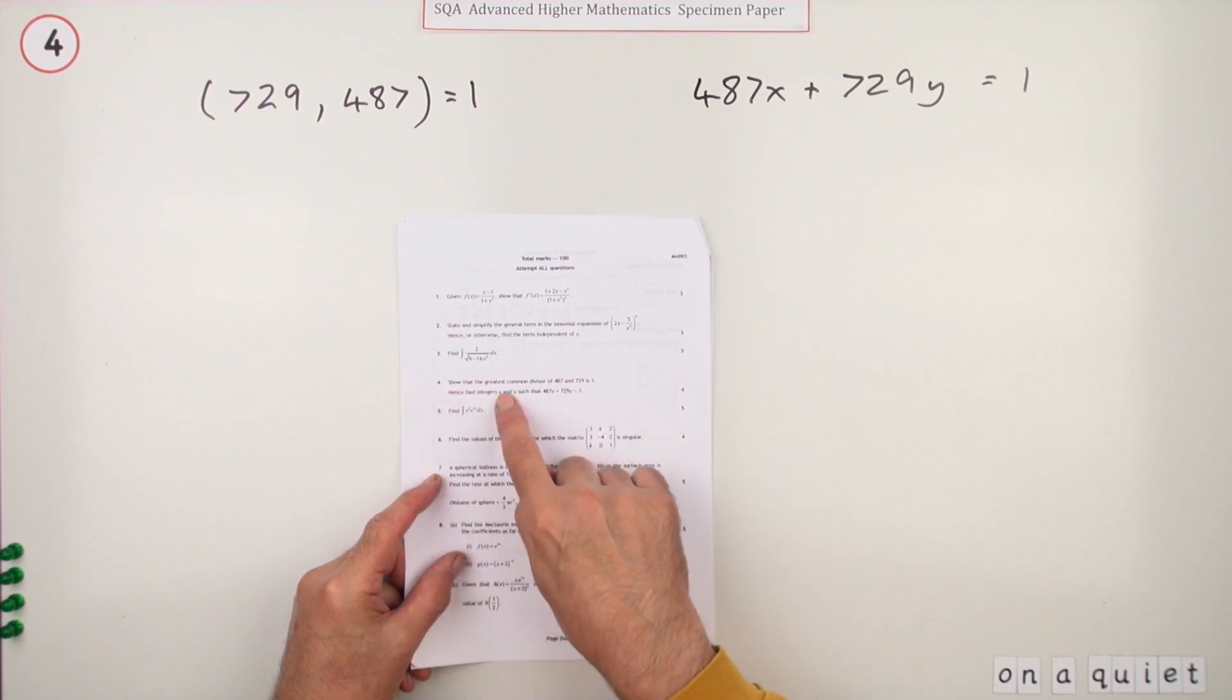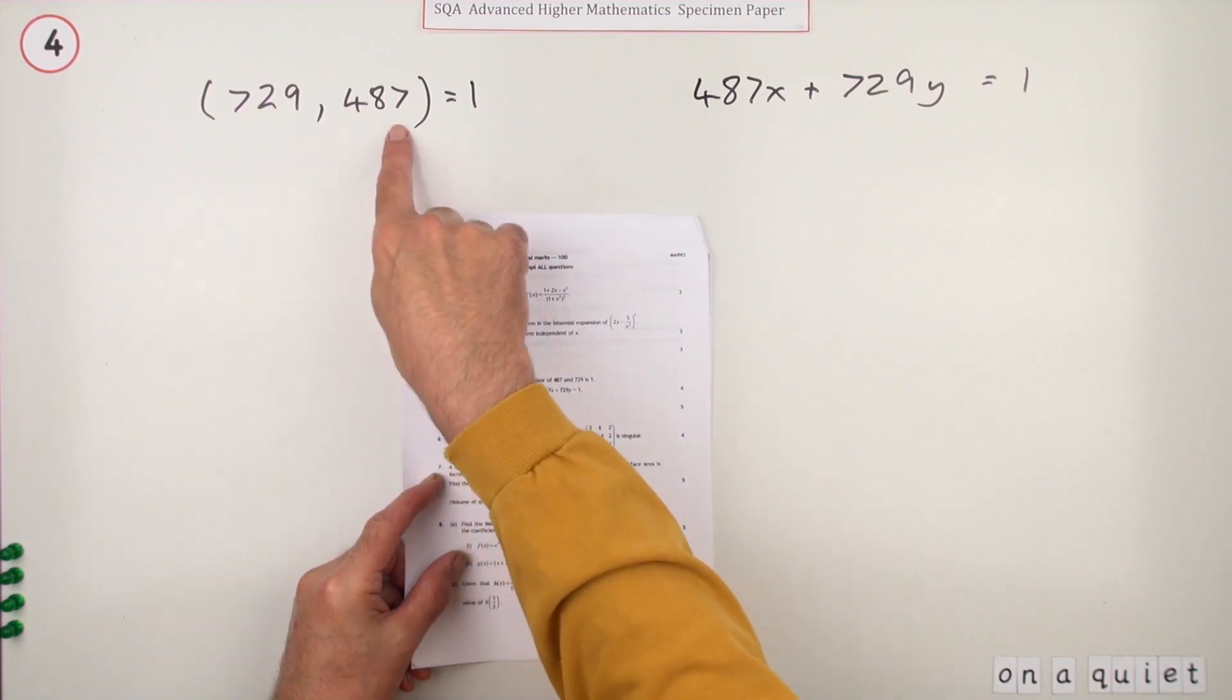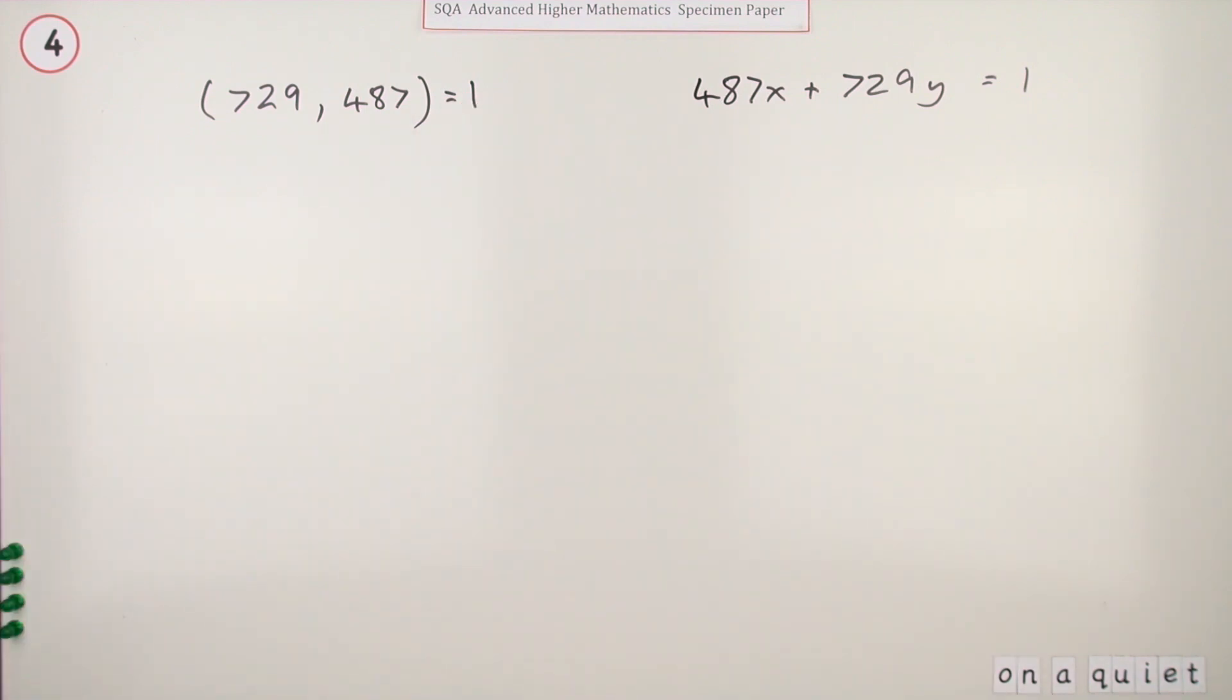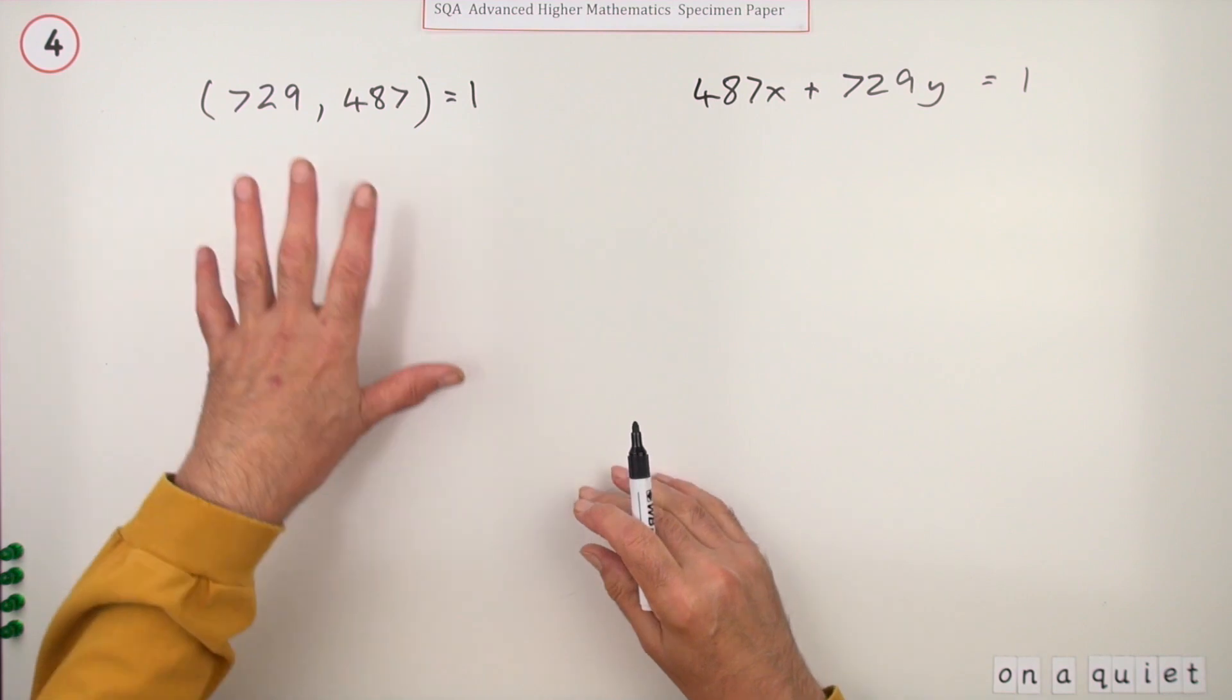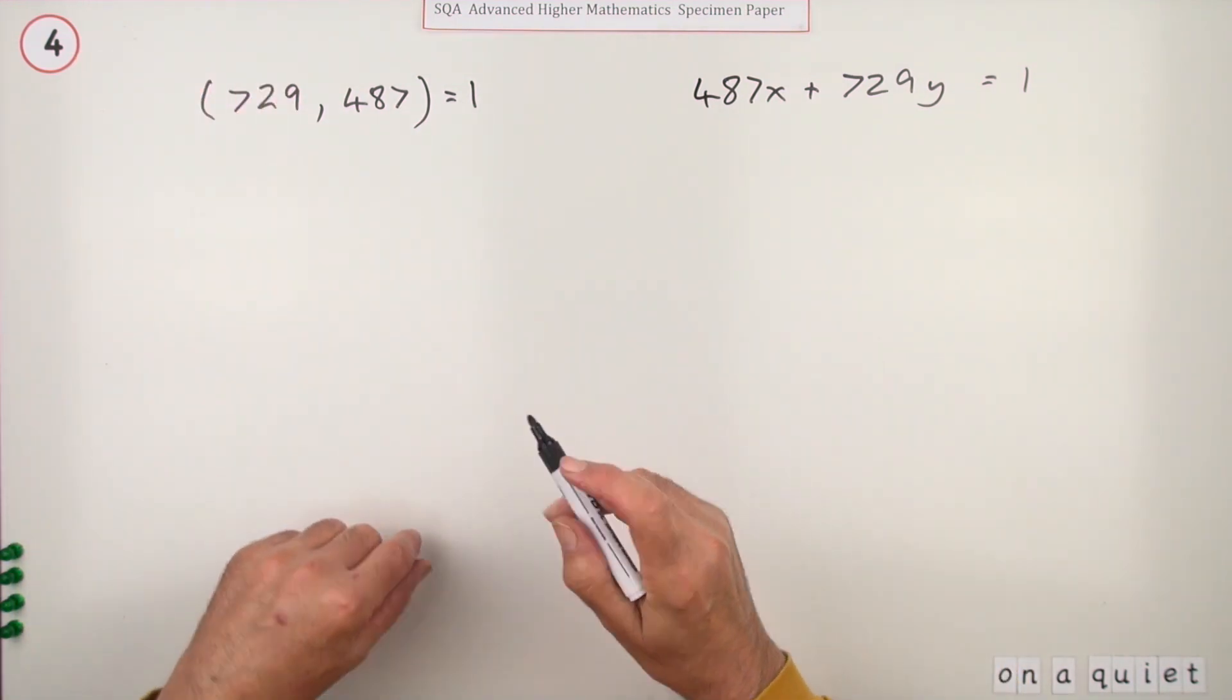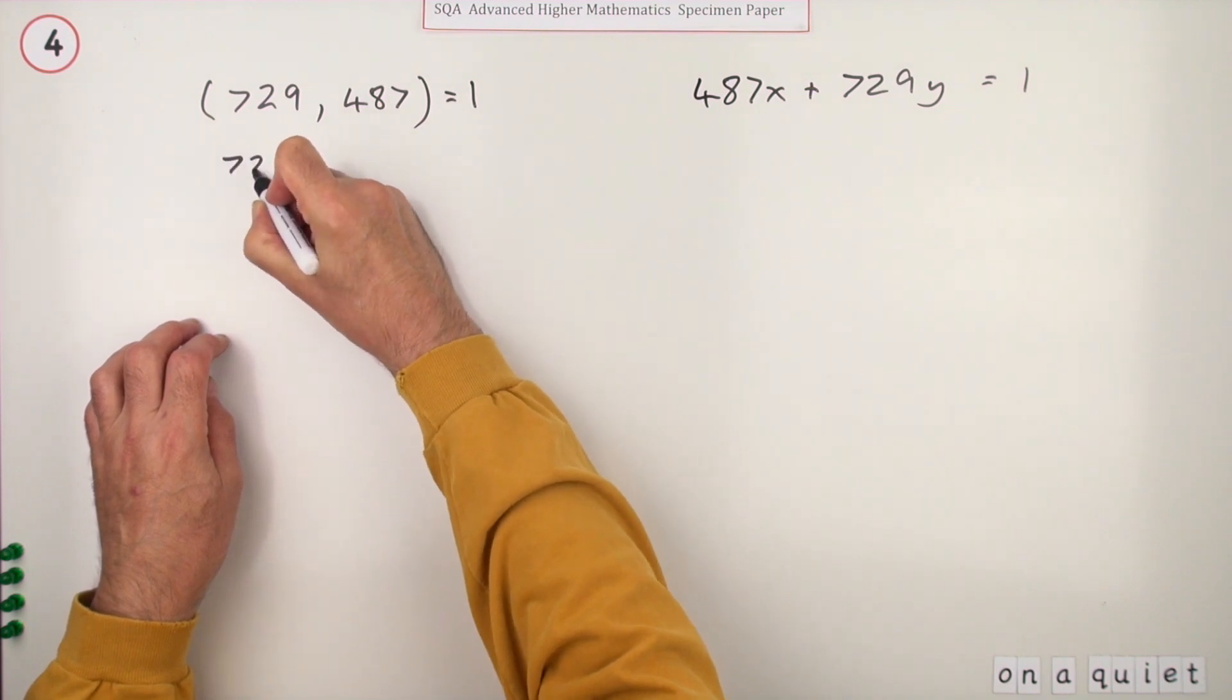It says show that the greatest common divisor of these two numbers is one, so you already know the answer. The marks are split: two marks for this part, two marks for this part. The way it starts is you start off with 729.